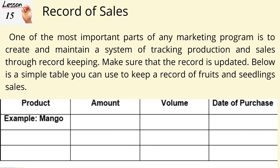Record of sales: one of the most important parts of any marketing program is to create and maintain a system of tracking production and sales through record keeping. Make sure that the record is updated. Records of farm activities provide substantial reference in making a marketing plan, creating a budget, and in making decisions. Likewise, records are sources of data in obtaining credit and insurance and in preparing for income tax returns and reports required by the government.